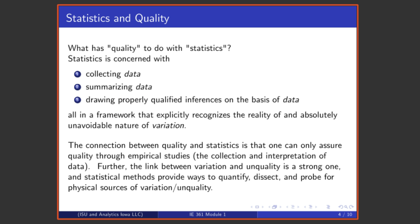Let's then think about what statistics has to do with quality, quality assurance, what statistics has to do with process improvement. In order to address that, let's review what statistics is about. Statistics is concerned with collecting data, summarizing data, drawing inferences from data, and doing that in a context where one recognizes the absolute unavoidable nature of variation. There are in this definition two vital words: there is the word data and there is the word variation.